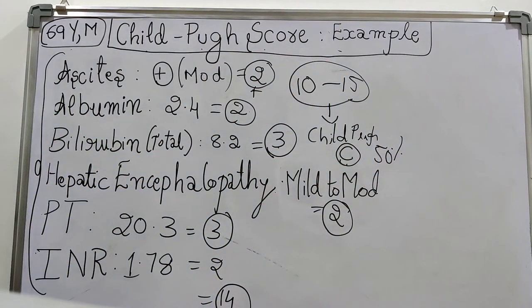And I hope this example makes clear how to calculate Child-Pugh score. Thank you.